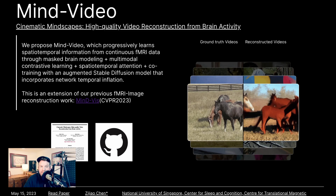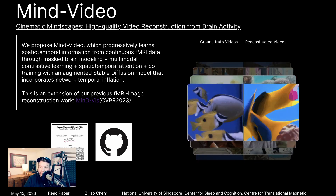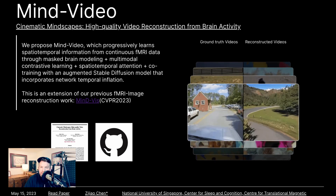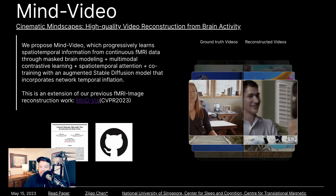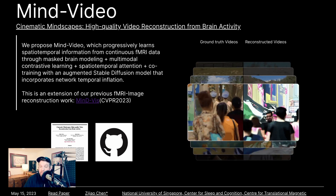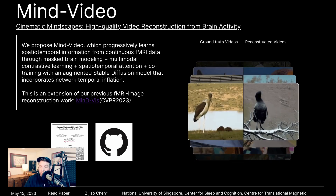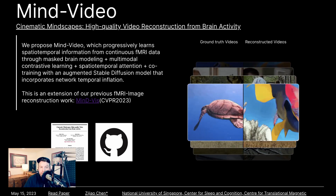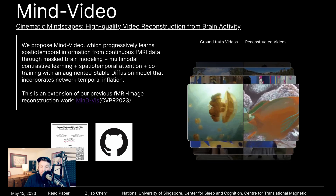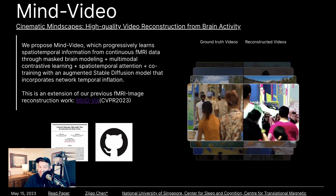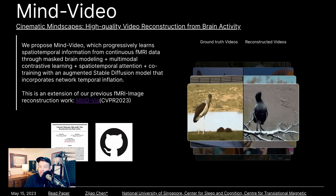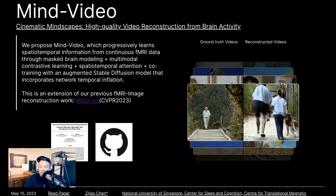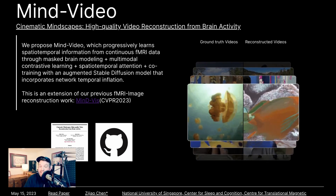One is BCIs, or brain-computer interfaces — devices that allow direct communication between the brain and an external device. A use case might be someone experiencing paralysis being able to interact with the physical world again. Another field interested in this technology is neuroprosthetics — think visual prosthetics, where someone with vision loss could bypass the damaged parts of the visual system and stimulate brain activity with signals corresponding to images or videos they're seeing. This research is also valuable for neuroscience and cognitive research. Some people are interested in forensic and law enforcement use cases — reconstructing images or scenes from a witness's memory — though serious ethical debates surround it. And there's the entertainment and gaming use case, where people could control virtual worlds simply by thinking thoughts.